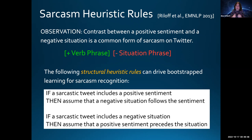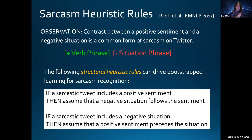That led to the hypothesis that a lot of sarcasm—not all, sarcasm is a very complex phenomenon—but there's a common type of sarcasm born of contrast between a positive sentiment and a negative event or state. It's the juxtaposition of those two things that creates the sarcasm. This contrast pattern can occur the other way too—a negative verb phrase in a positive situation—but the positive sentiment with negative event is the more common pattern.